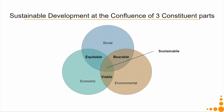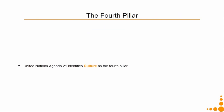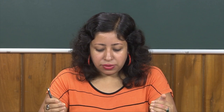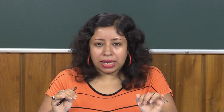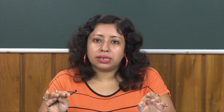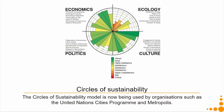Sustainable development happens at the confluence of three constituent parts: social, economic, and environmental. According to United Nations Agenda 21, a fourth pillar — culture — was added. Different organizations identify different pillars or dimensions for different purposes. I will explain this from the context of Circles of Sustainability, which is a very comprehensive model now being used by organizations such as the United Nations Cities Programme and Metropolis. This matrix is used for measuring the level of sustainability of different cities and metros, and comprises four dimensions: economics, politics, ecology, and culture.